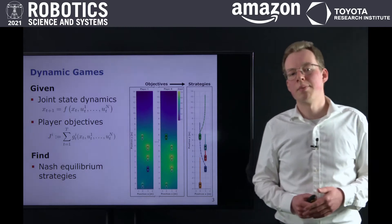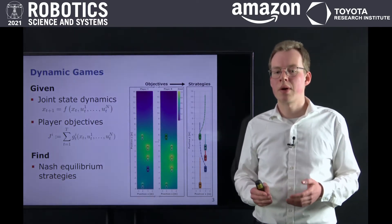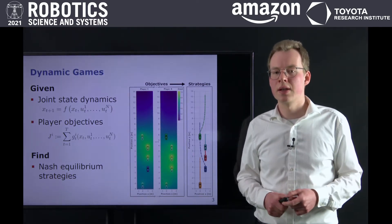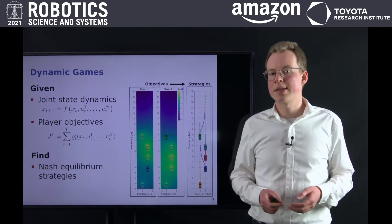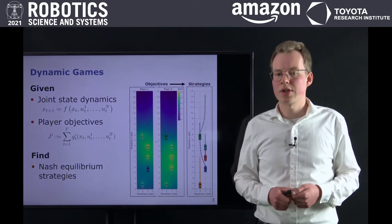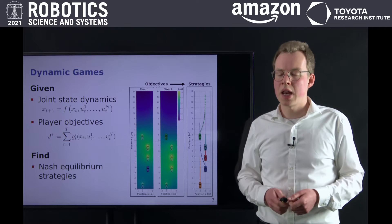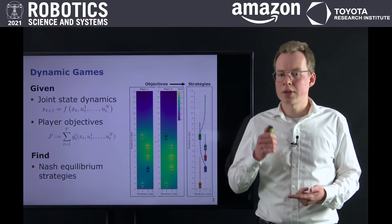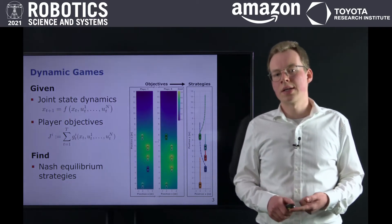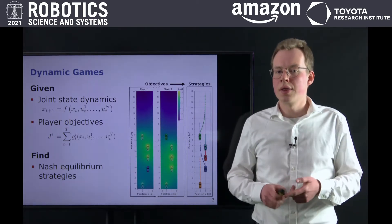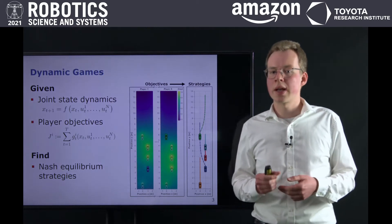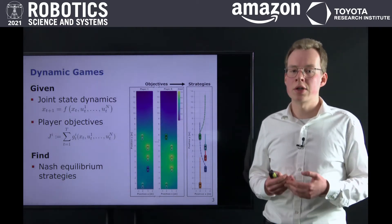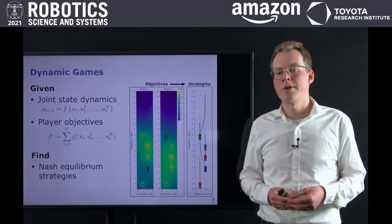Dynamic game theory provides a powerful mathematical framework for reasoning about these coupled decision-making processes. In order to model a given problem as a dynamic game, two pieces of information are required. First, the dynamics f, which characterize the evolution of the joint state x, and second, the cost functions ji, which encode the objectives of every player. Using this game theoretic description of the problem, we can predict player behavior for arbitrary initial conditions by solving for equilibrium strategies.